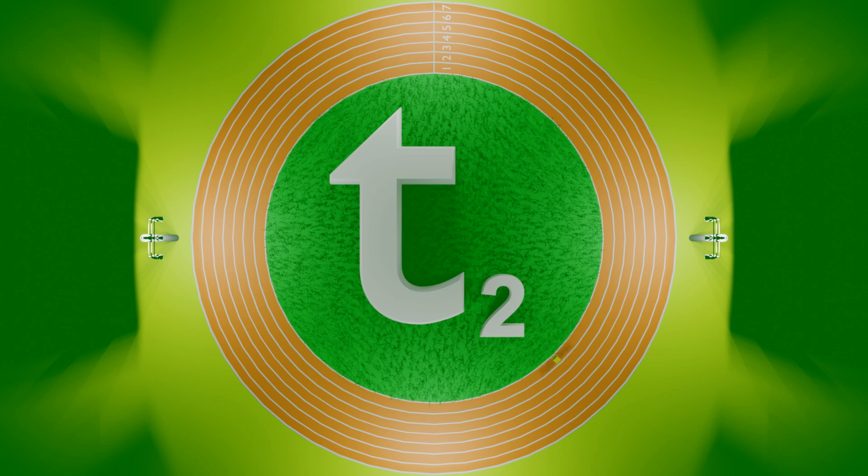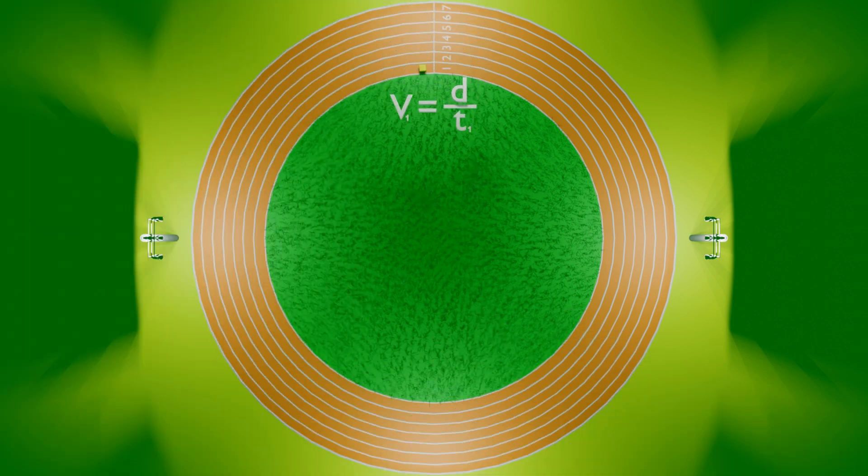Your intuition tells you that this will work, but let's see what happens when we apply our variables to some equations. The speed of your first lap is equal to the distance around the track divided by T1.